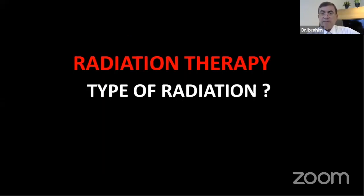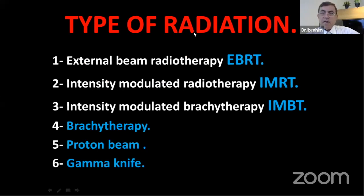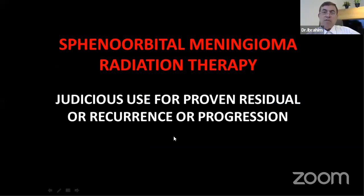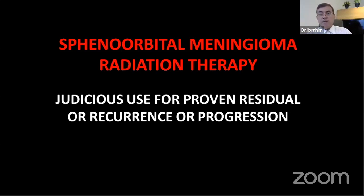Types of radiation vary by institution: external beam, intensity-modulated, brachytherapy, proton beam, and gamma knife. The take-home message is judicious use of radiation for residual or recurrent tumor — not upfront. Surgeons who lack experience in surgery treat with radiation instead, which is not what the patient needs. The patient needs surgery first; radiation should be reserved for recurrence.